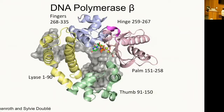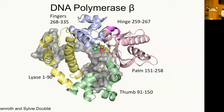DNA polymerase beta has two activities: it has a DRP lyase activity that can remove a DRP group from a five-prime end of DNA, and it also has a polymerase activity. Here you'll see the DNA moving through the polymerase with the substrate, in this case a dCTP. This is the lyase domain, the thumb domain which binds to DNA and modulates interactions, the palm subdomain where the active site is, and then the fingers which modulate binding of the dNTP. The nomenclature is based on Tom Steitz — when he first crystallized a Klenow fragment, he likened it to a right hand gripping a rod, the rod being DNA.